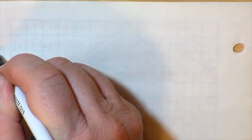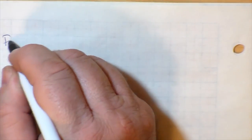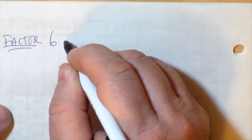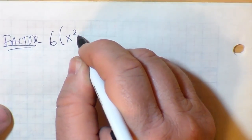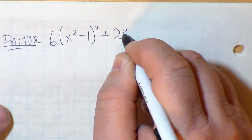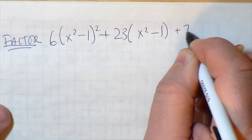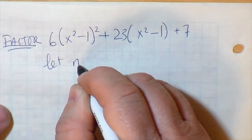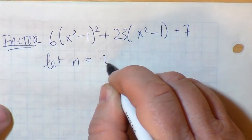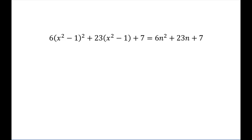Now, here's another kind of problem where you're asked to factor. Let's say that we were asked to factor this: 6 times the quantity x squared minus 1 all squared, plus 23 times x squared minus 1, plus 7. Notice that x squared minus 1 is kind of like a common term in two of the expressions. So, if we let n equal x squared minus 1, we get 6n squared, plus 23n, plus 7.